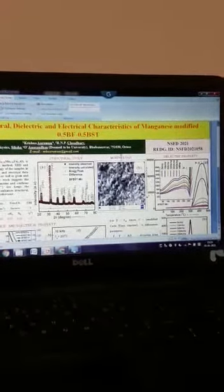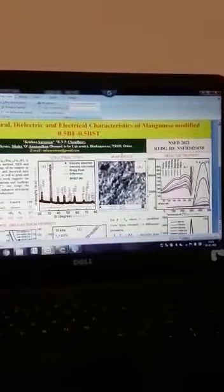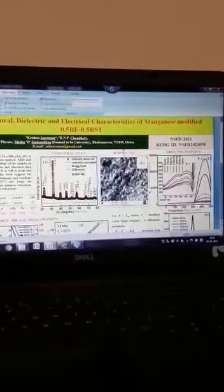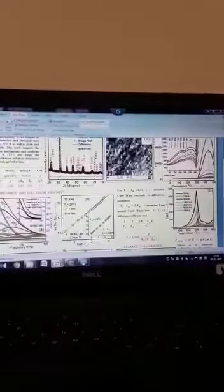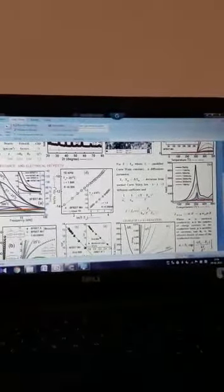This shows the ferroelectric to paraelectric phase transition. The multiple peaks may be due to relaxation mechanism of the material. We can see with increase in frequency, the peaks are diffused. The diffusion coefficient is calculated to be between 1 and 2, and the value is shown here for both the peaks.